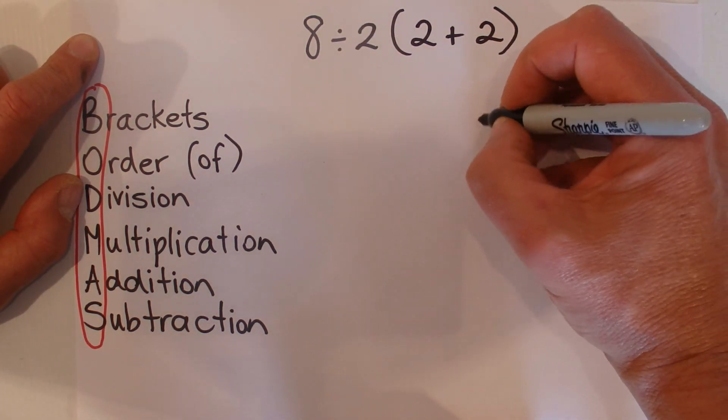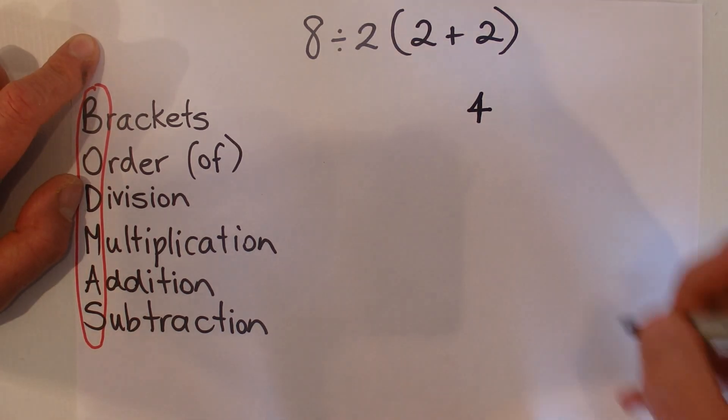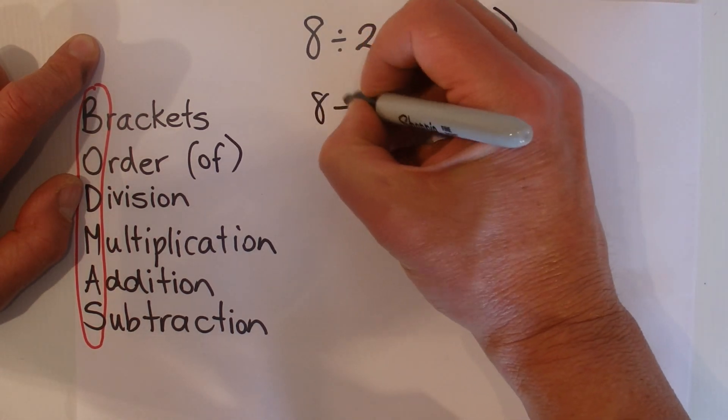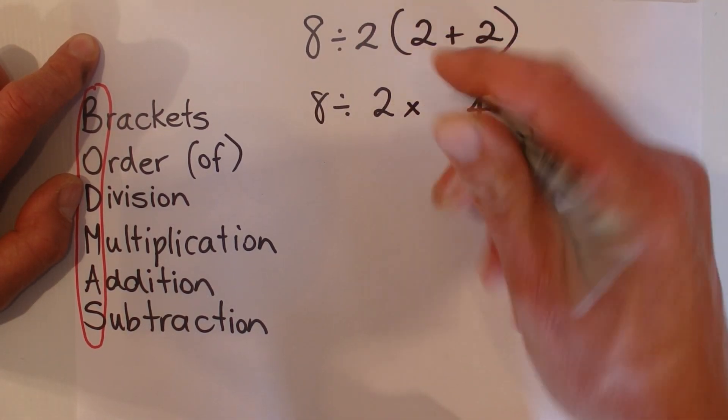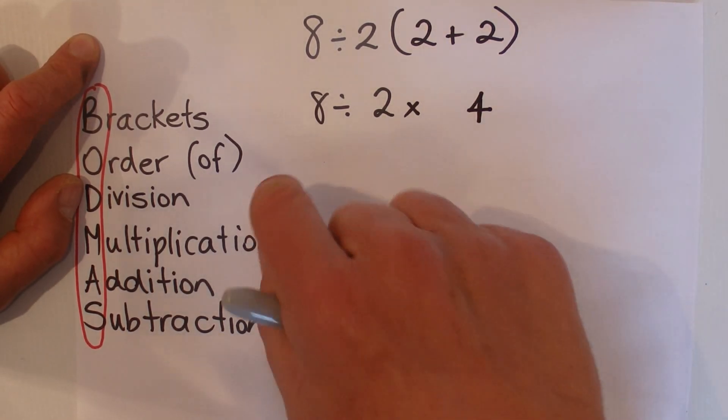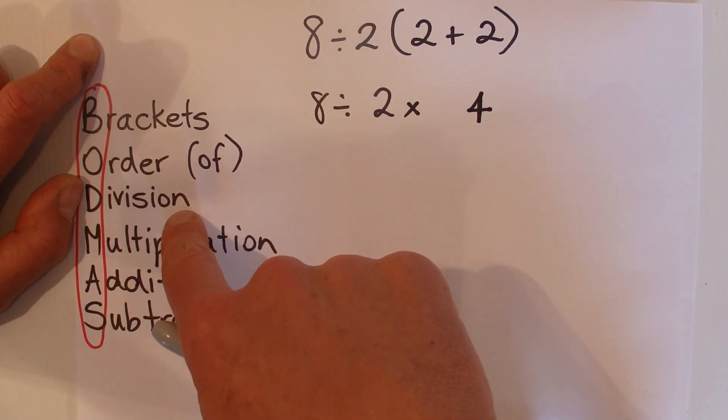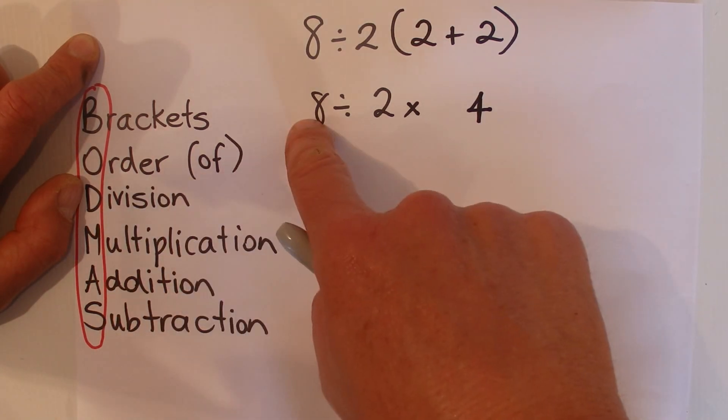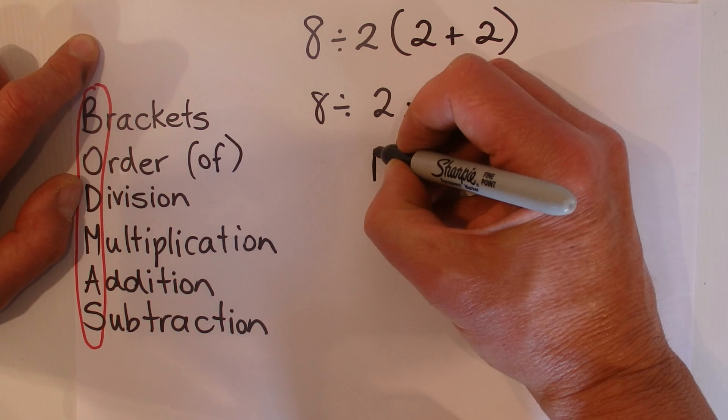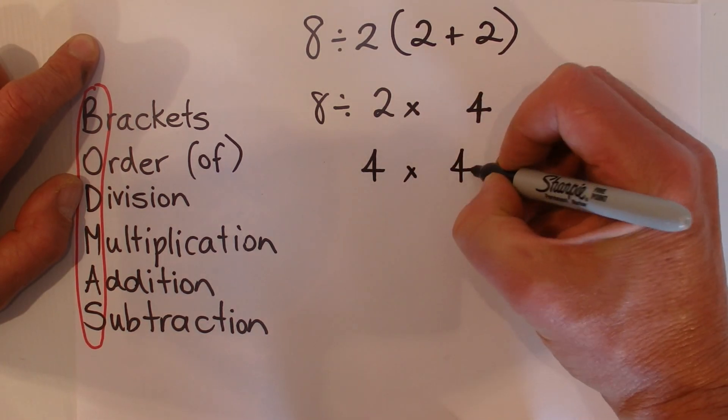So 2 plus 2 is 4. Then there's nothing to the power of, so next you need to do the division. 8 divided by 2 is 4, and 4 times 4 equals 16.